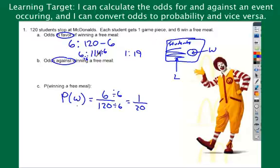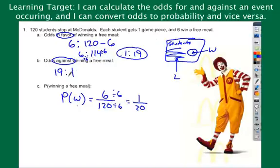Odds against just takes that and flips it — losers first — so 19 losers for every 1 winner. Notice the work here: you need to show where you got the 114 from, show the simplifying, and show the final ratio. For odds against, if asked both, all you have to do is flip it. Notice the difference between odds and probability — the 20 includes the 19 losers and the 1 winner.